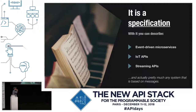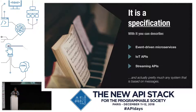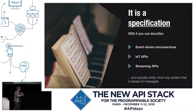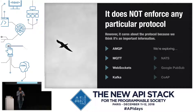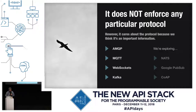I want to make it clear: this is a specification. This is not a tool, this is not a service or something you can just use. This is like an RFC. It's a specification. The idea for this specification is to describe event-driven microservices, IoT APIs, streaming APIs, and pretty much anything that is message-based. We care about the protocol, and the list of protocols it supports includes a bigger list, but mainly AMQP, MQTT, WebSockets, and Kafka. And we're exploring more.